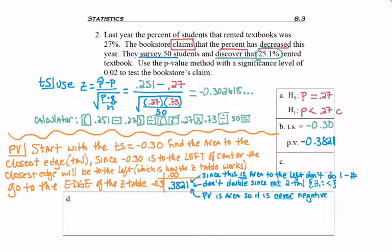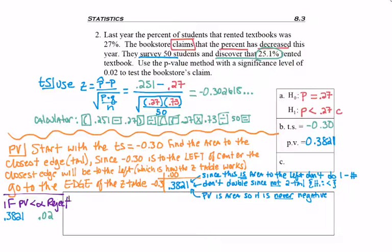Now I need to decide whether I reject or fail to reject H-naught. The rule is: if the p-value is less than alpha, reject H-naught. So is 0.3821 less than alpha, which is 0.02? If you're confused comparing a four-digit number to a two-digit number, you can add zeros — think of it as 3,821 vs. 200, which it is not. So we fail to reject H-naught. Always be sure to write H-naught.